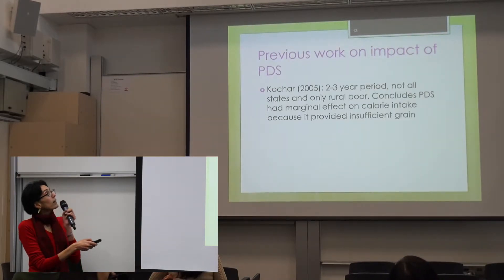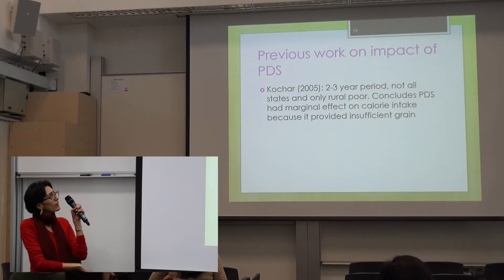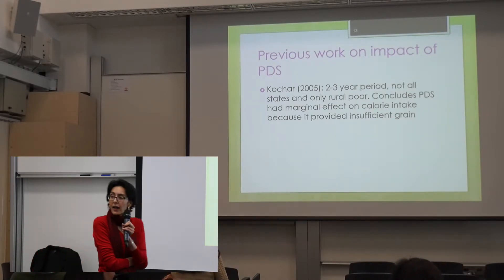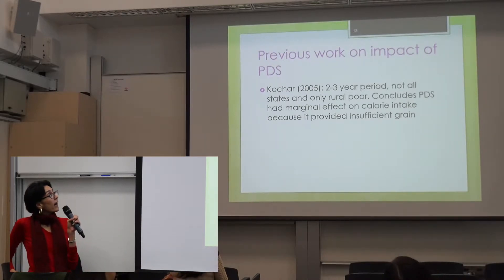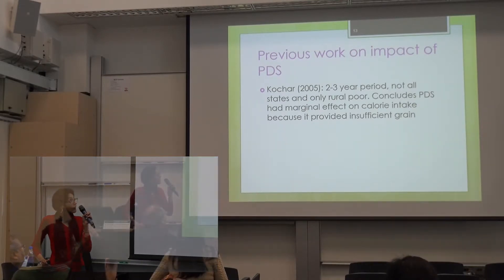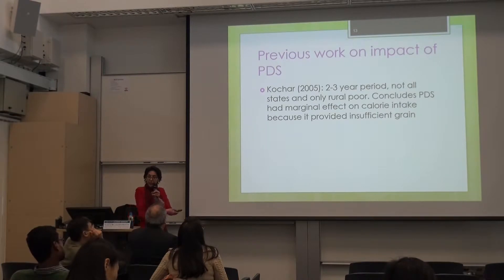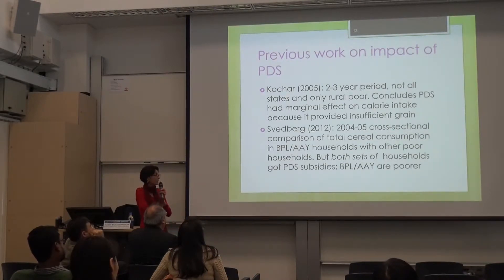There has been some previous work on the impact of the PDS, but not much. There's a study covering just a two or three year period after targeting of the subsidy started — 1997 to 1999 — but it didn't cover all Indian states and only covered the rural poor. The conclusion, however, is similar to my paper: that the PDS has had only a marginal impact on the calorie intake of the poor, because it gave them very small quantities of grain.